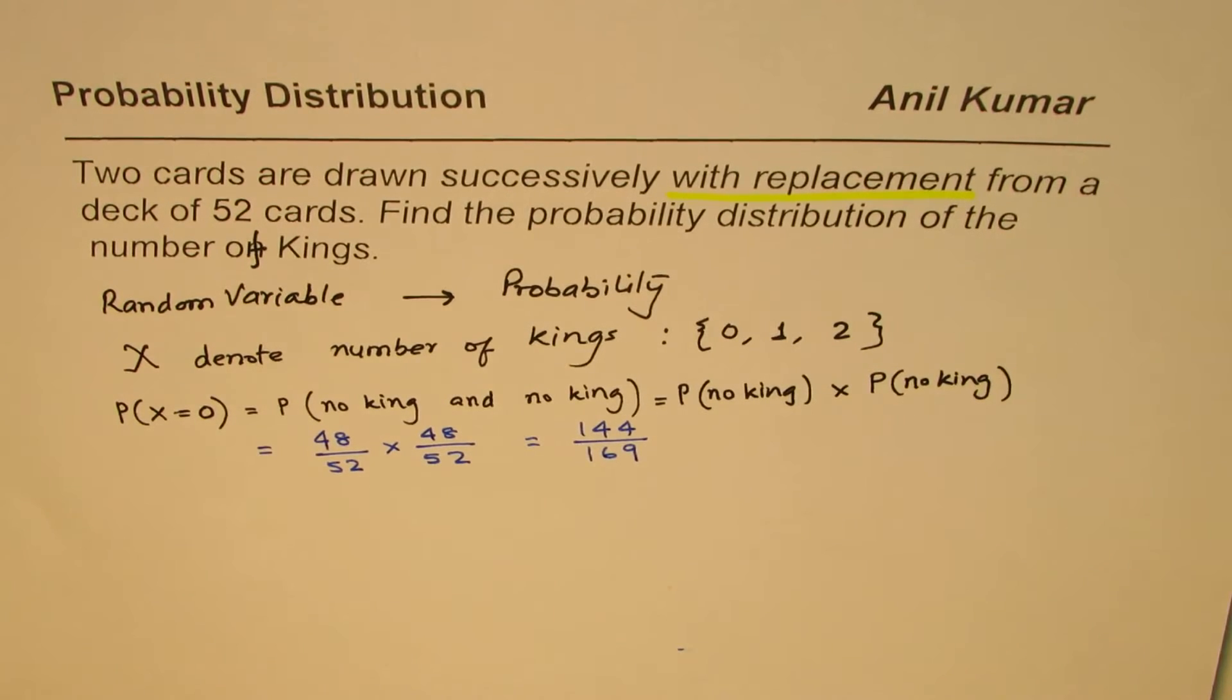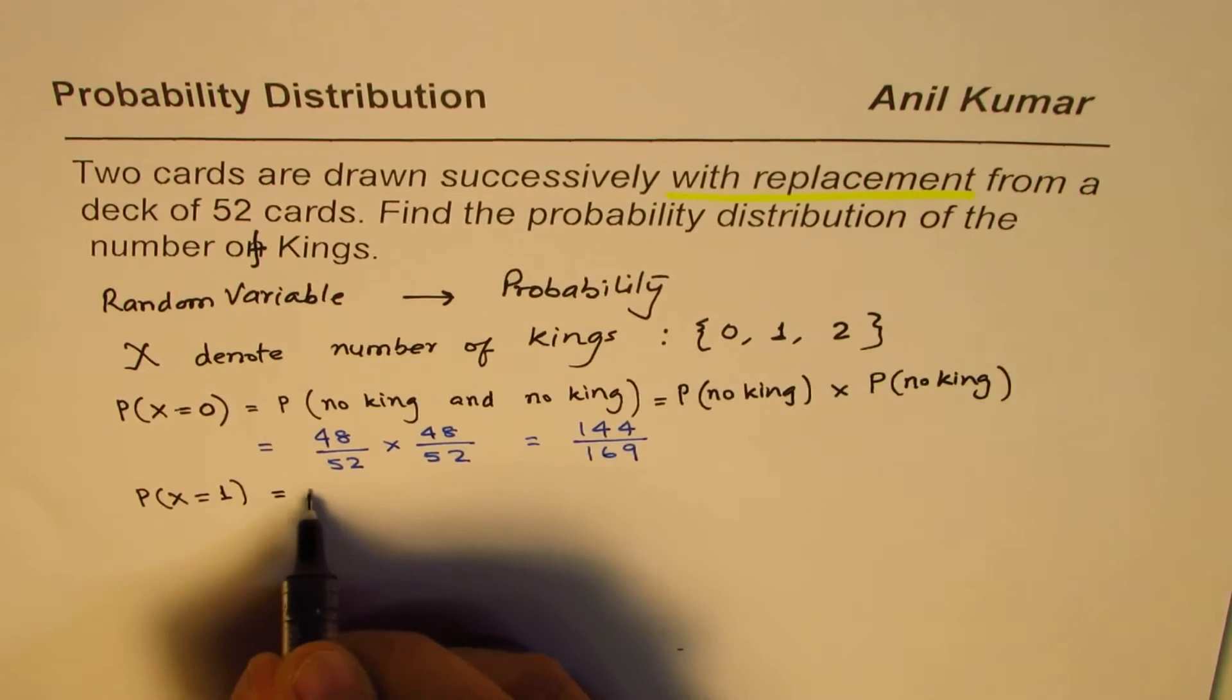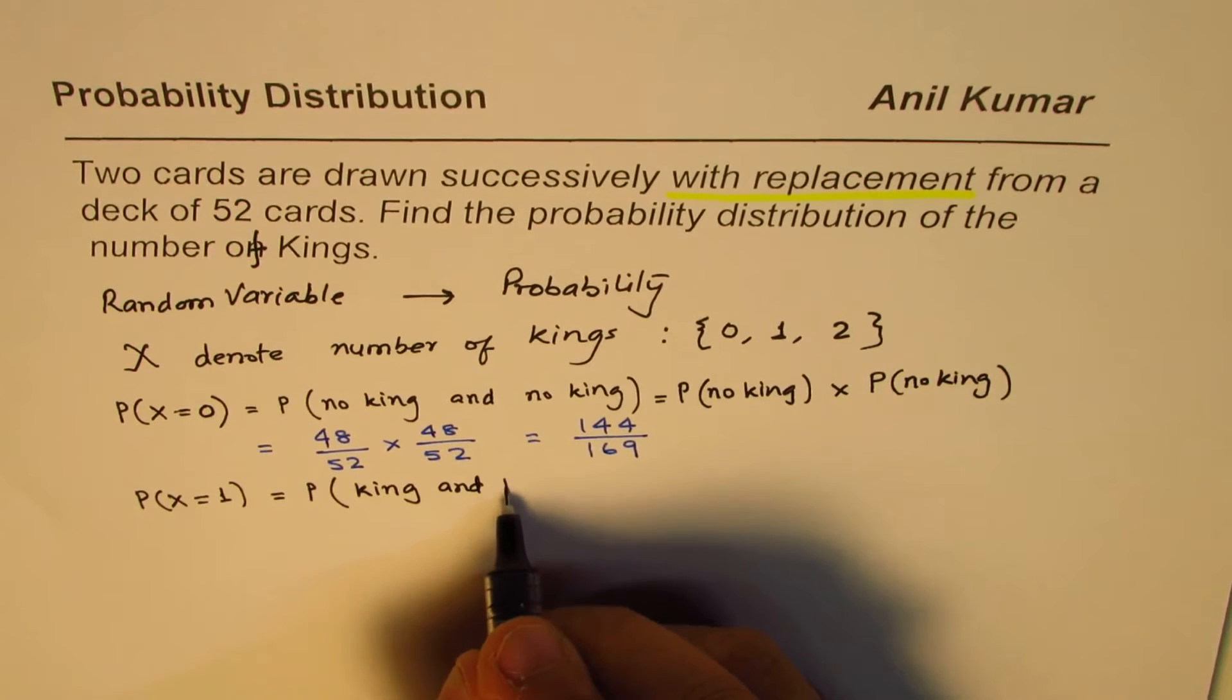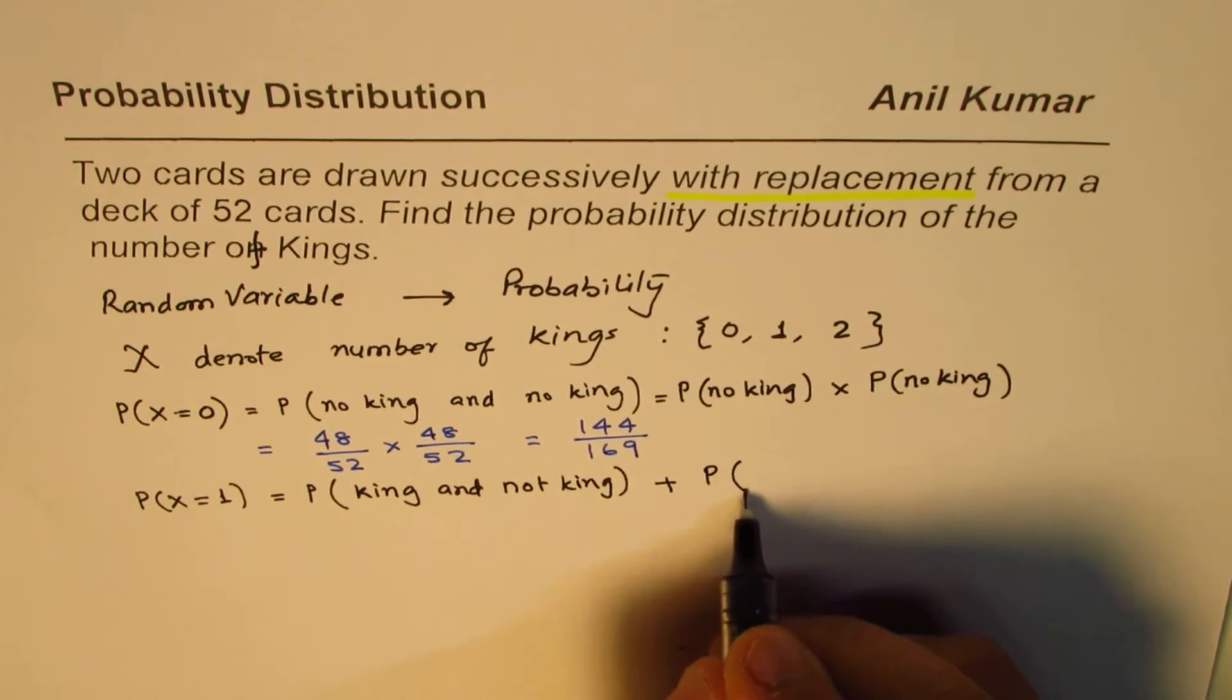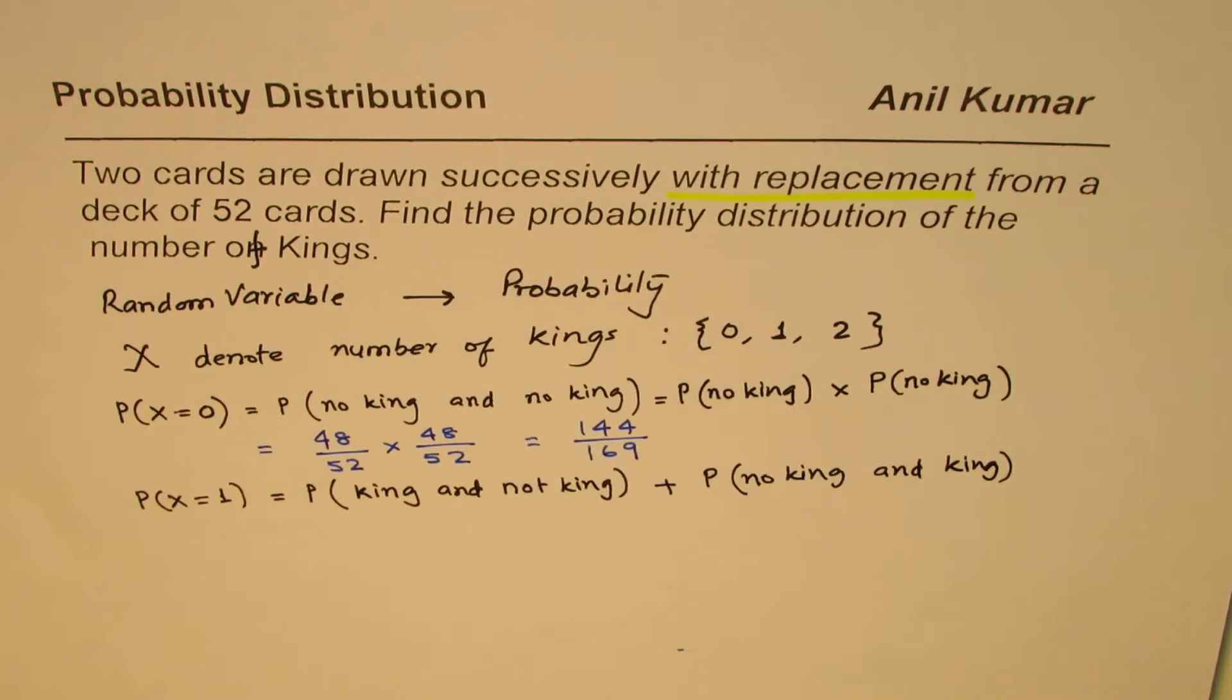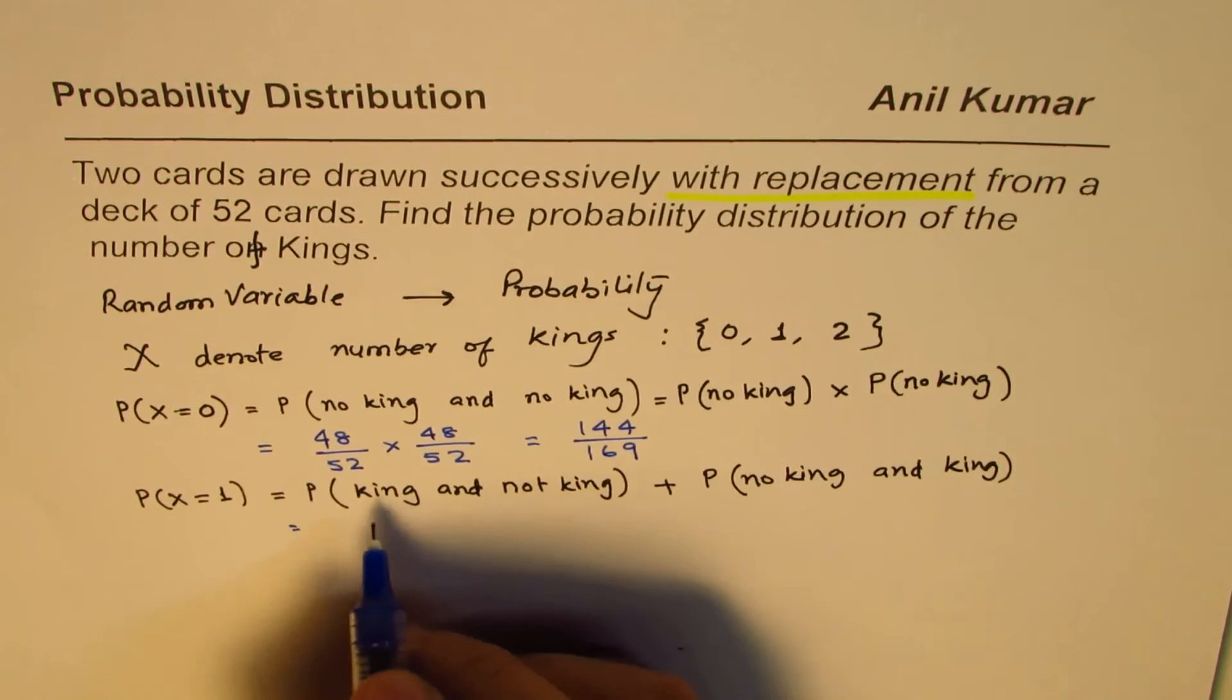What is the probability for getting one king? Probability when X equals to 1, that is one king. That could happen if we draw first a king and then some other card. So we draw a king and not king, or we draw first no king and then a king. That is what is the case when we get one king. And means we have to multiply, or means to add the probabilities.